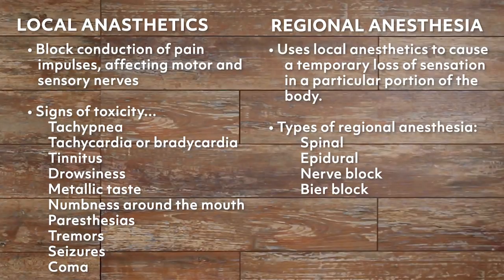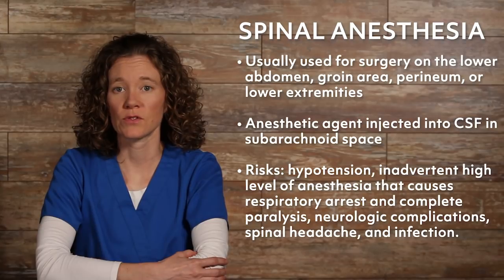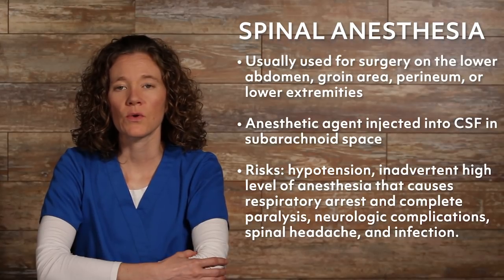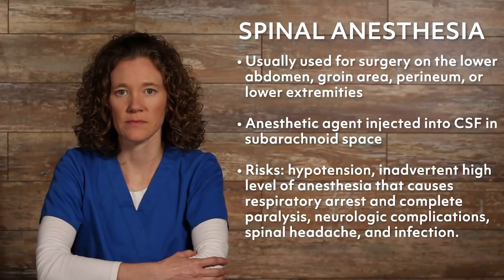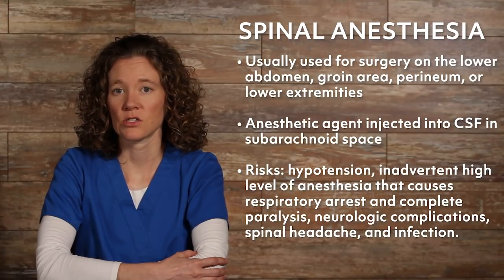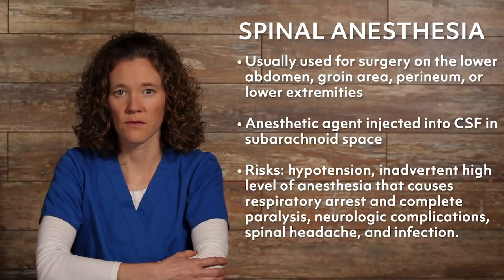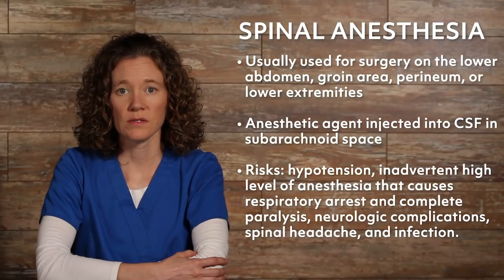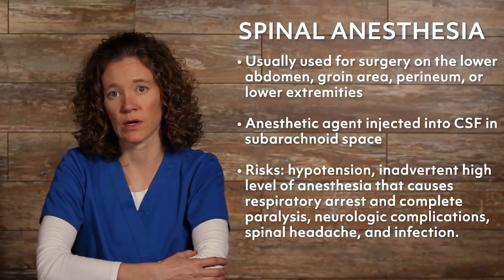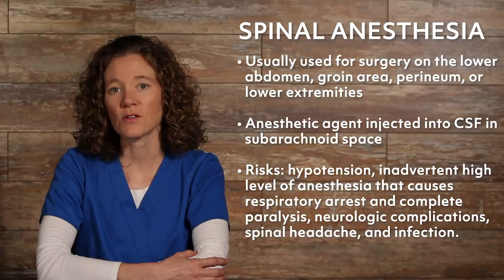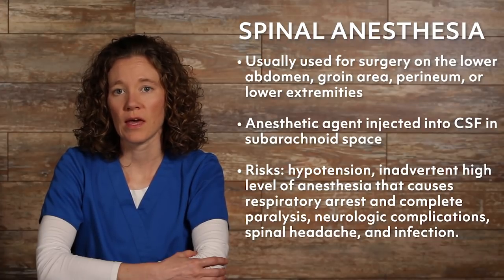Regional anesthesia uses local anesthetics to cause a temporary loss of sensation in a particular portion of the body. Types of regional anesthesia include spinal, epidural, nerve block, and Bier block. Spinal anesthesia is usually used for surgery on the lower abdomen, groin area, perineum, or lower extremities. The anesthetic agent is injected into the cerebral spinal fluid in the subarachnoid space. Risks include hypotension, inadvertent high level of anesthesia that causes respiratory arrest and complete paralysis, neurologic complications, spinal headache, and infection.